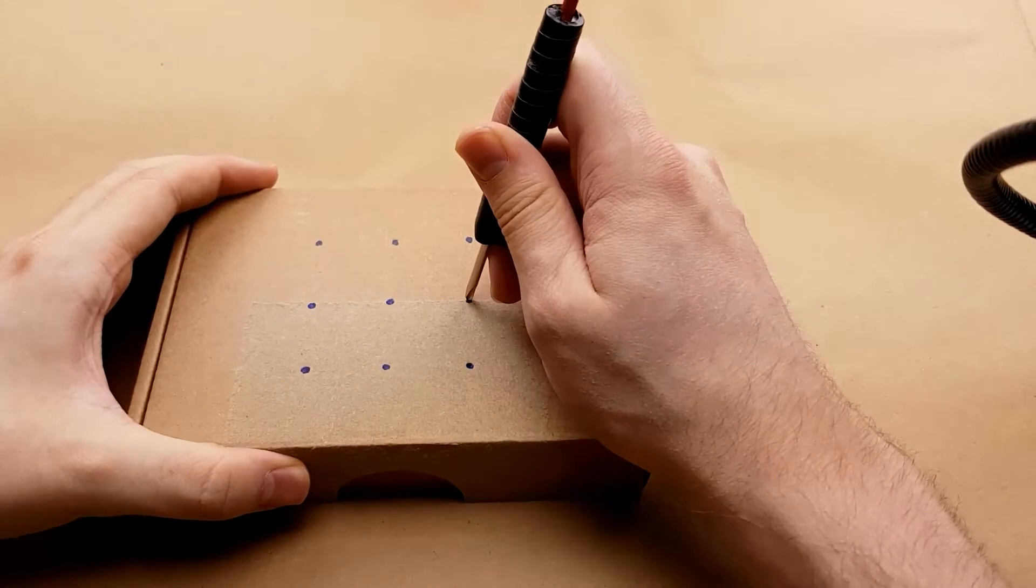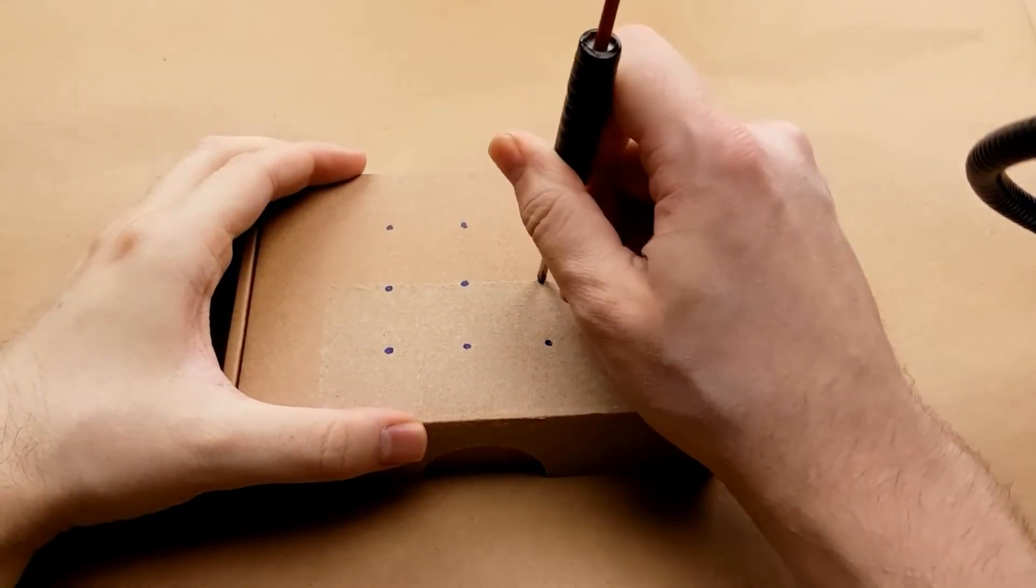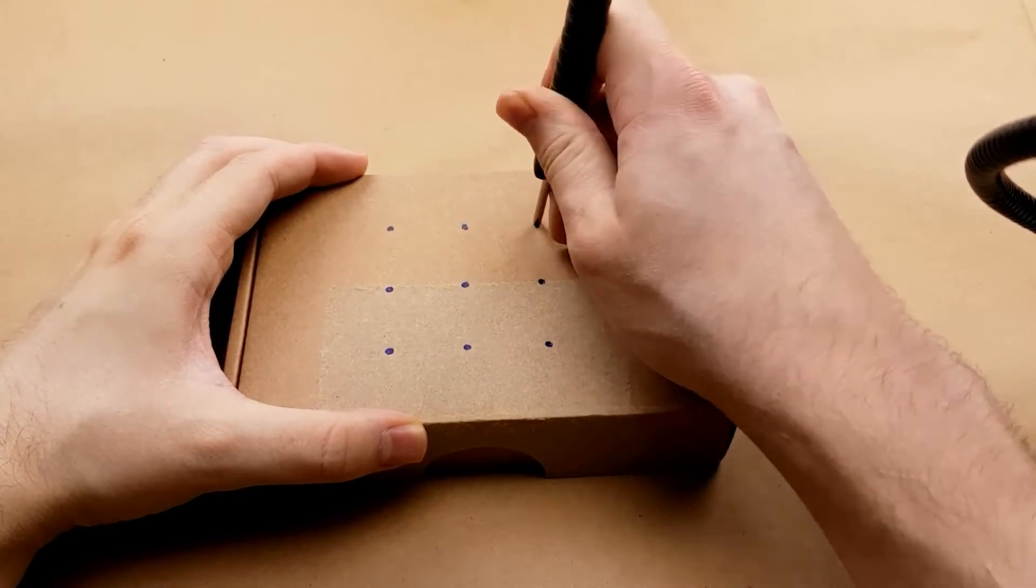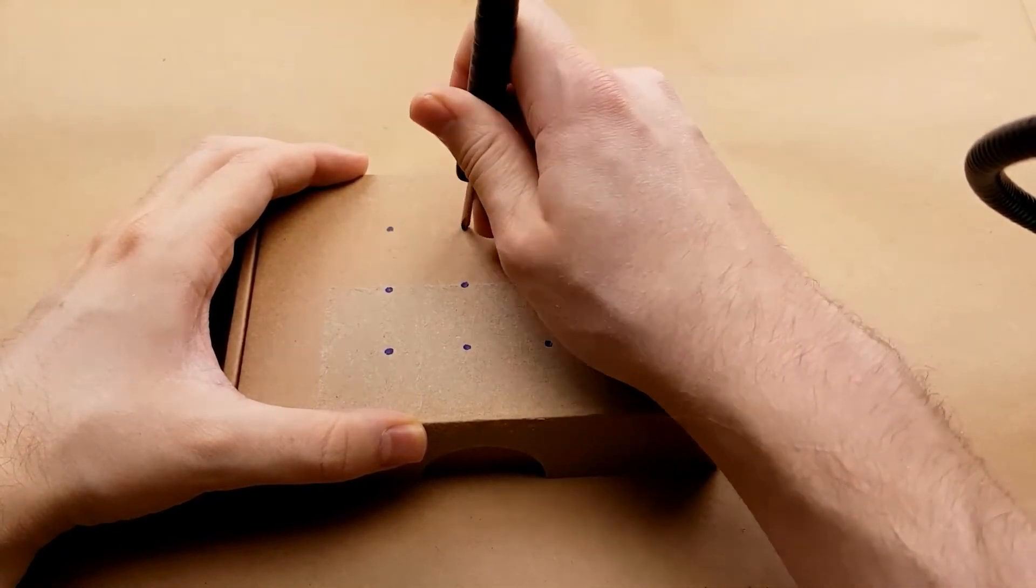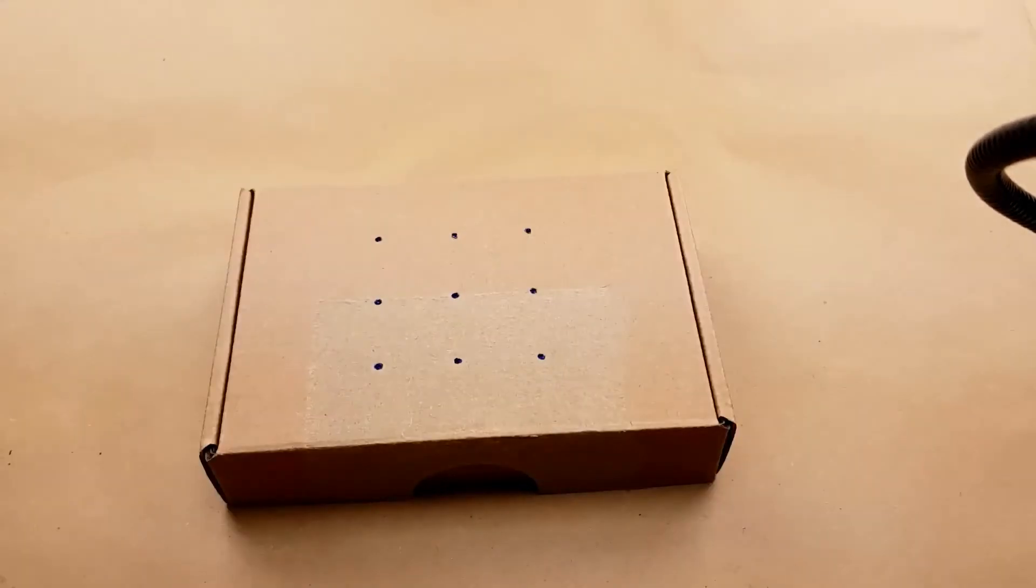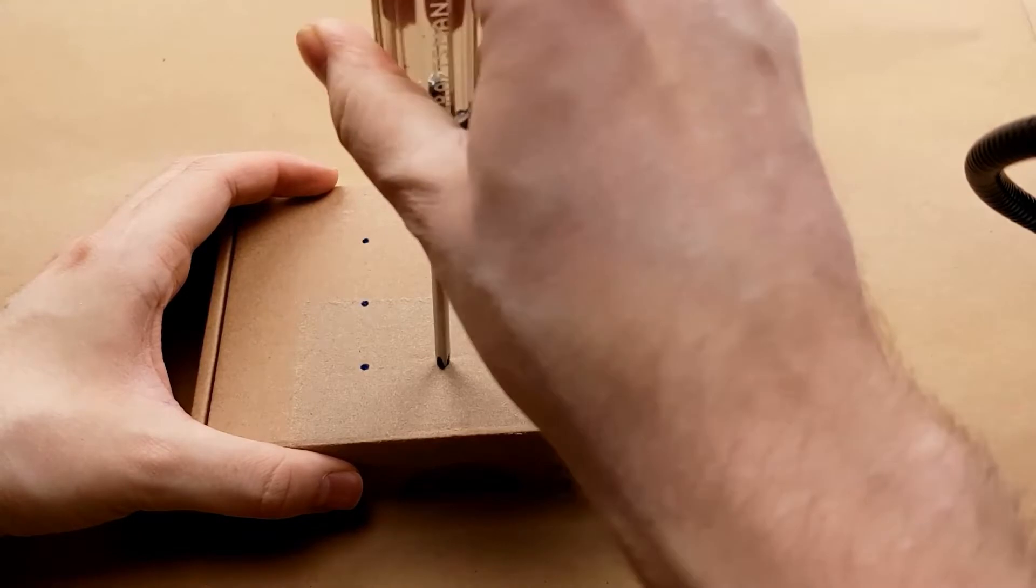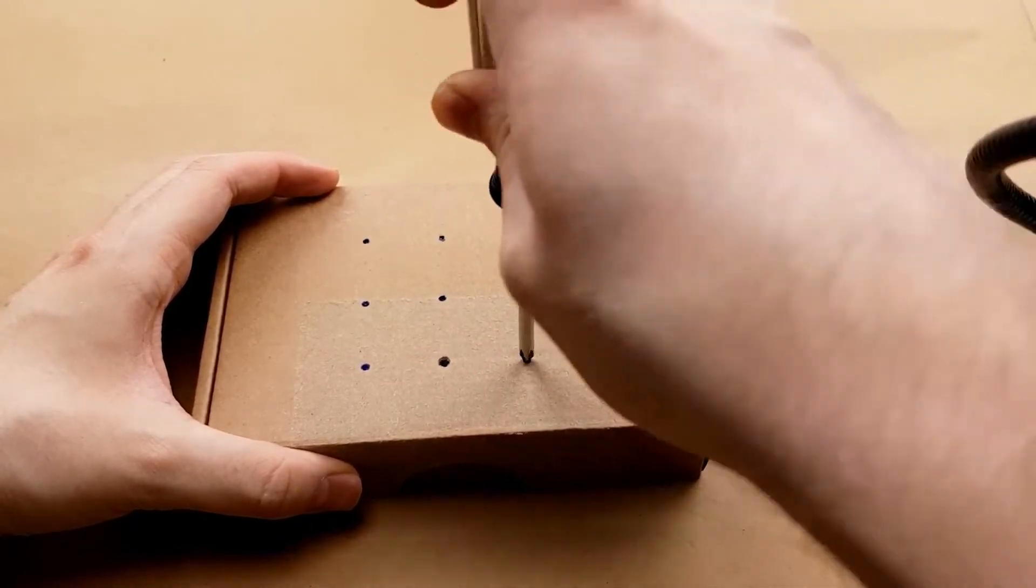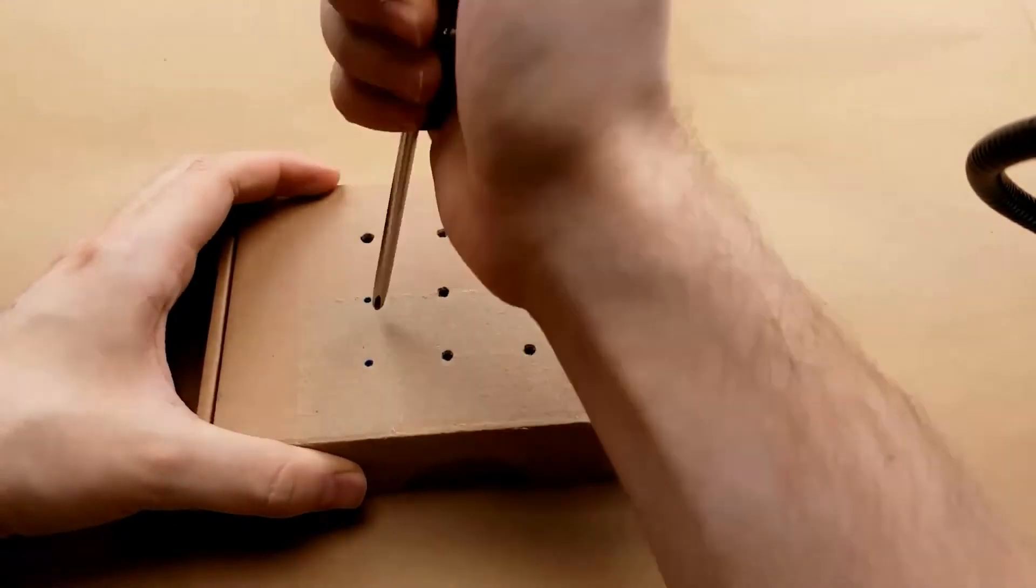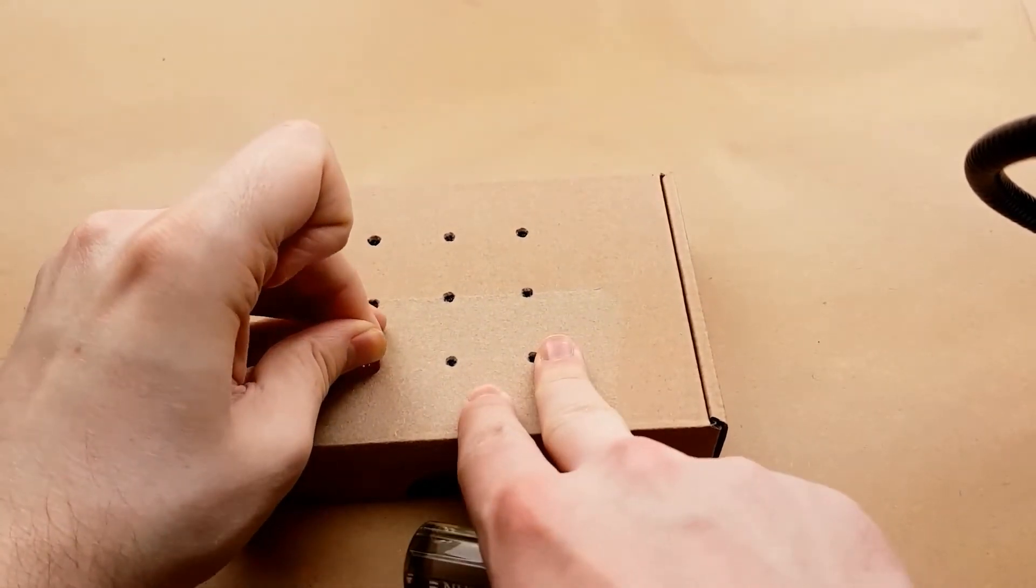So I'm just using the opposite side of my pointer, which just happens to be a screwdriver, to break the box first. Theoretically now I should be able to make it with a slightly bigger screwdriver. Yes. Perfect. Perfect size.